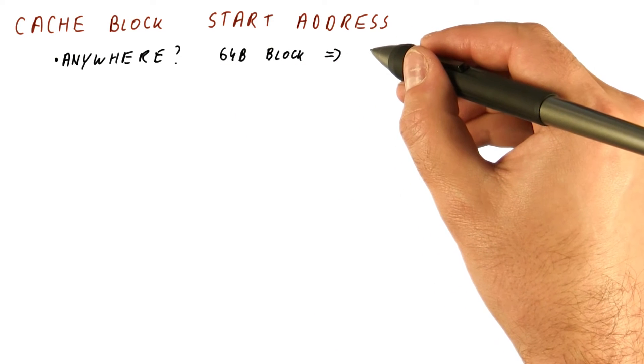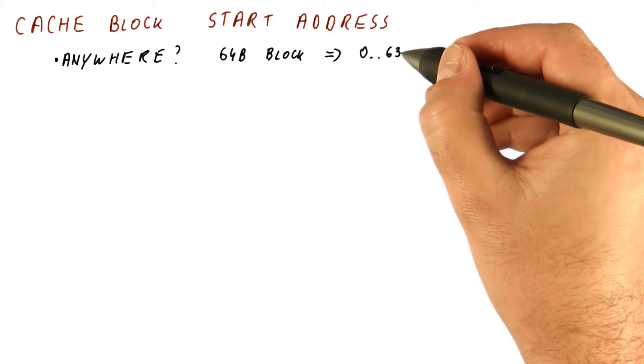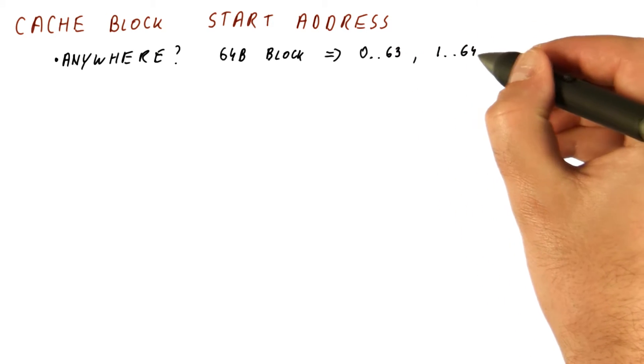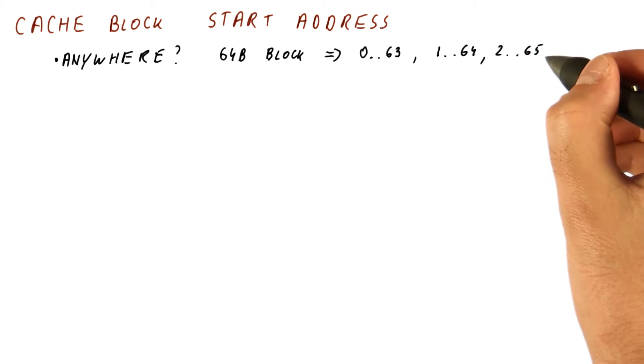That means that a block, for example, might go from address 0 through 63 bytes, or it can be from 1 through 64, or it can go from 2 to 65, and so on.